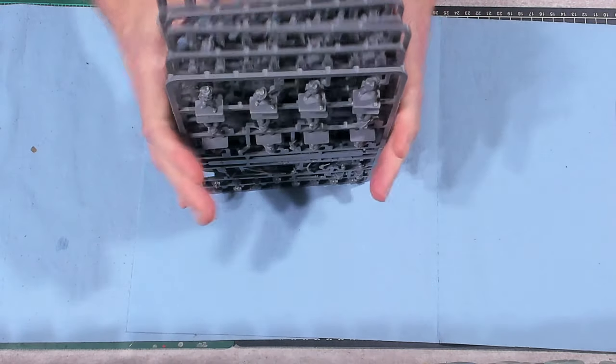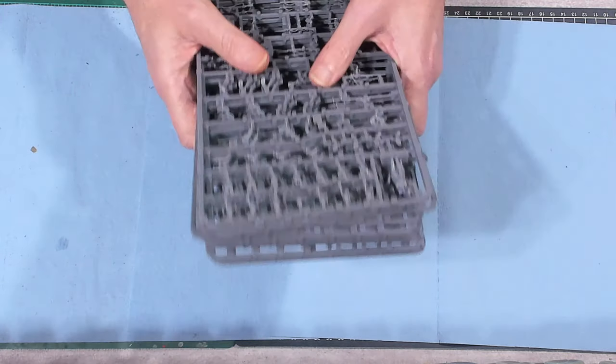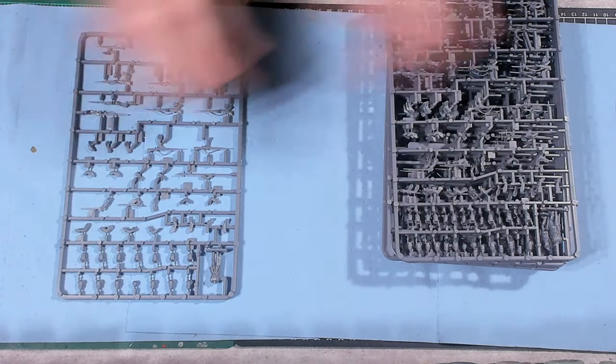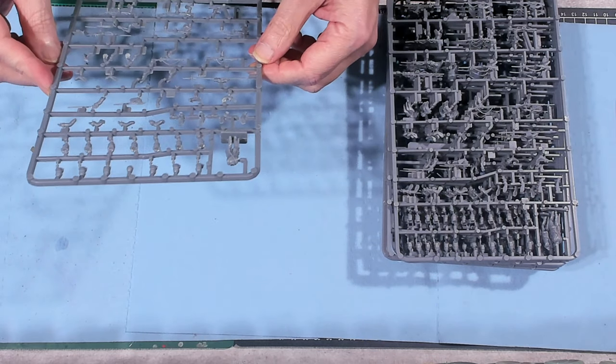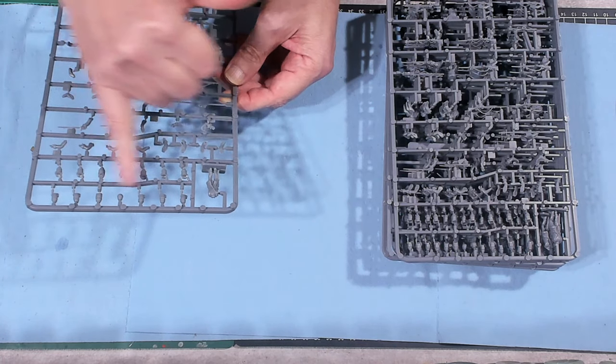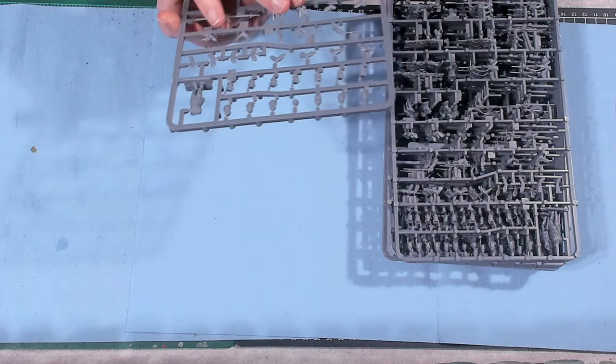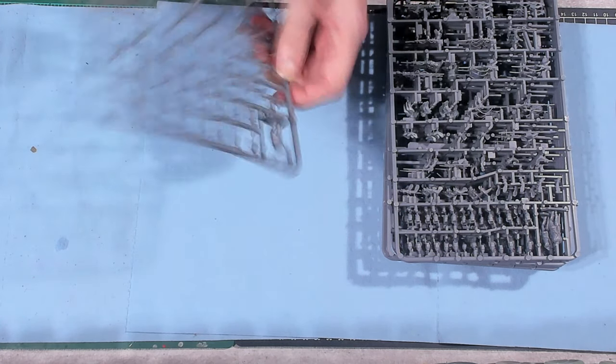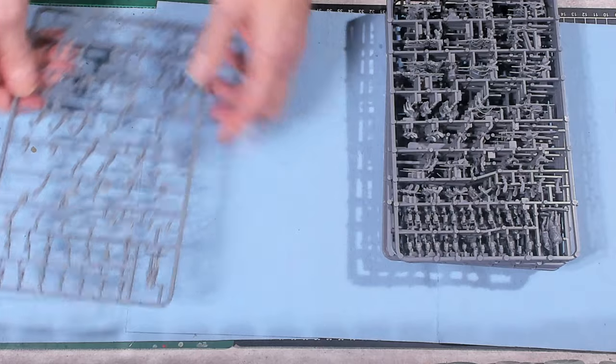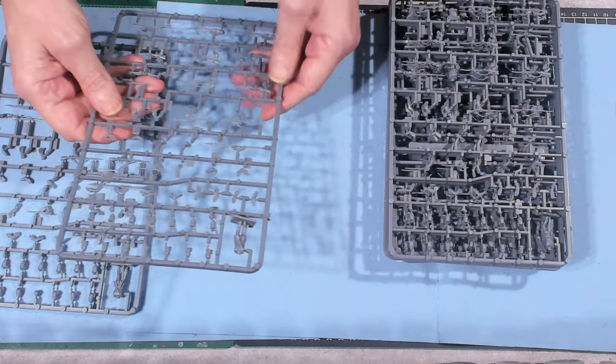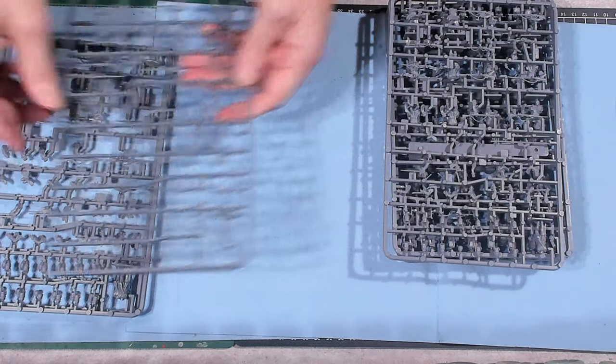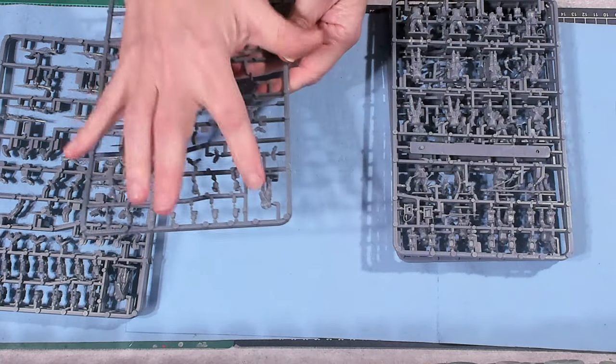Let's see what kind of variety we get here with these sprues. Yes there is a variety on the sprues. So we're going to have to figure out what we get. This looks like all kinds of accessories, weapon arms, heads, and one body. Looks like an officer of some kind. Same thing, arms, one body. Arms and heads, one body. Arms and heads, one body.